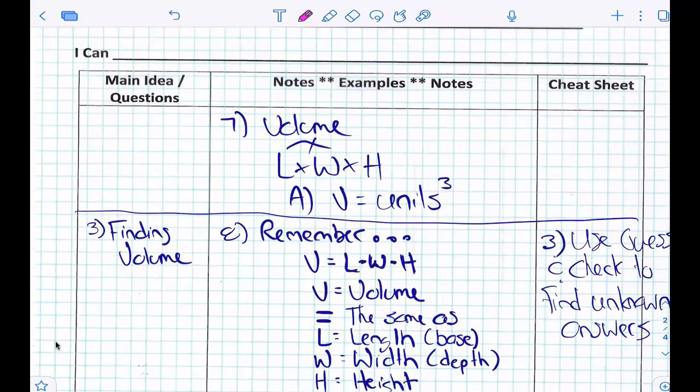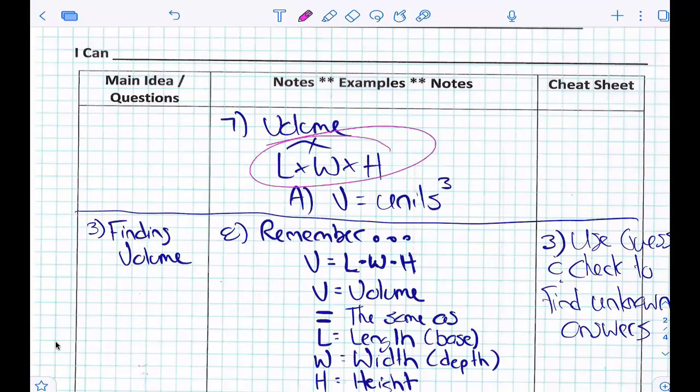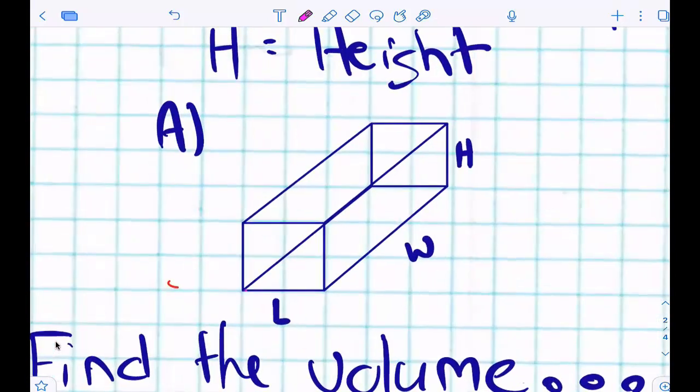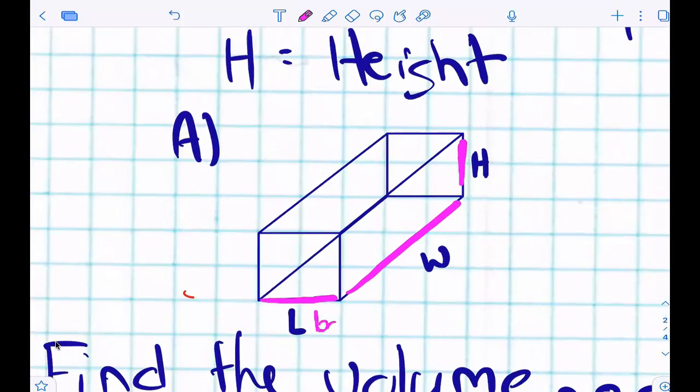How do you find the volume of a 3D shape? Because a 3D shape, or because volume is dealing with three dimensions, your label is units cubed. Right? Because how many dimensions are we talking about? Three. Okay, what's this dimension here? Could this one also be called like base? Could this one also be called like the depth? This one also be called like how tall it is? Yeah.